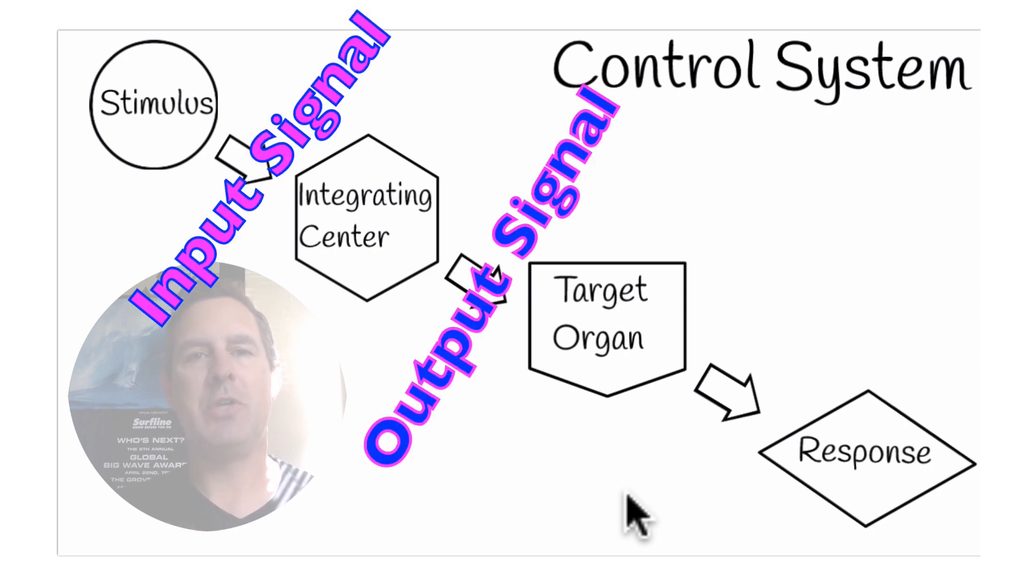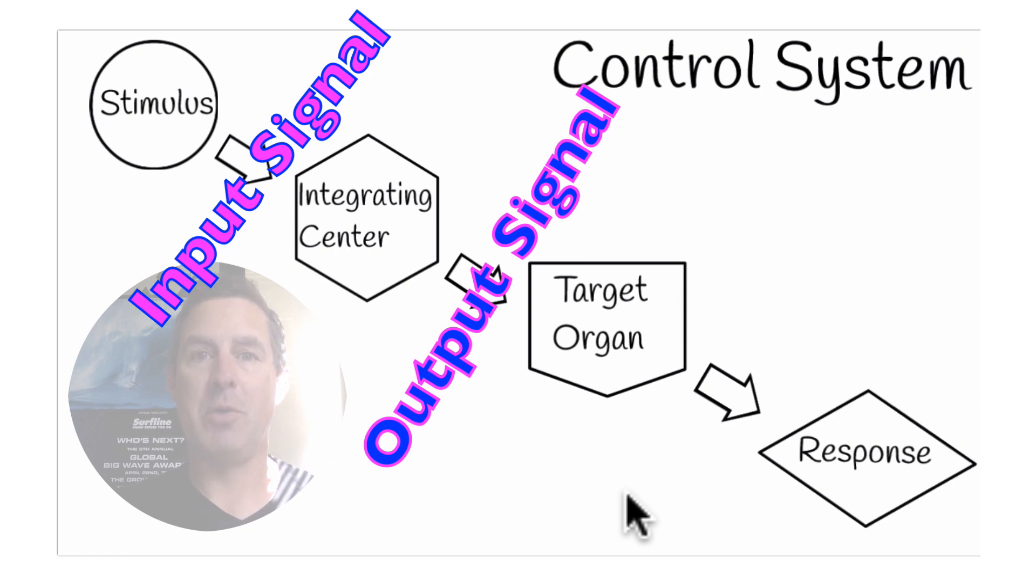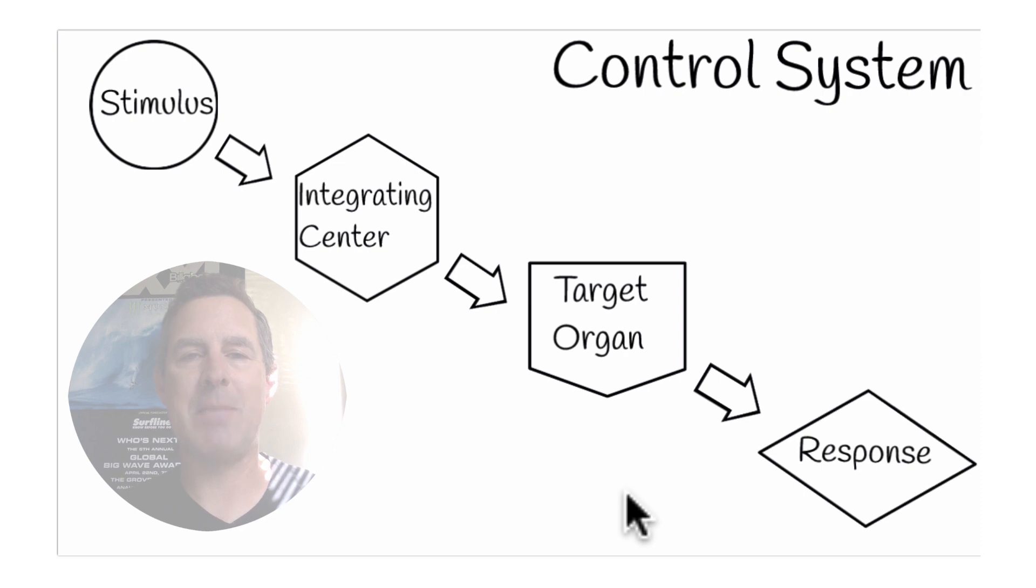Generally, there's two different forms of control systems. There's a local one, which is in a specific region of the body that controls the variable in that specific area, and we have a larger systemic reflex control system that deals with the whole body. If we're talking about the systemic control system, the integrating center is the brain.